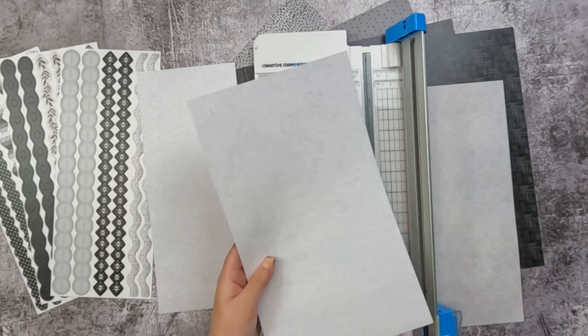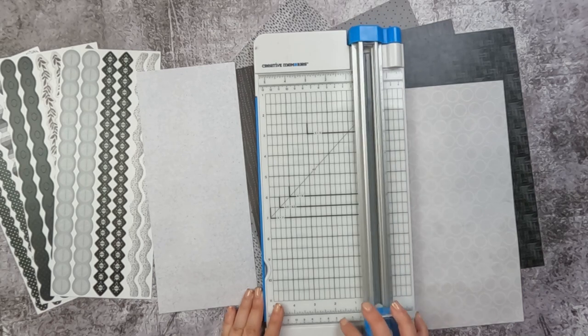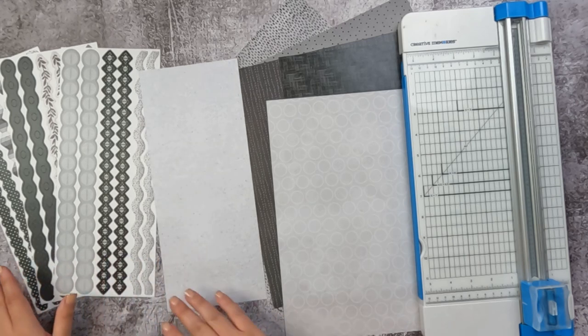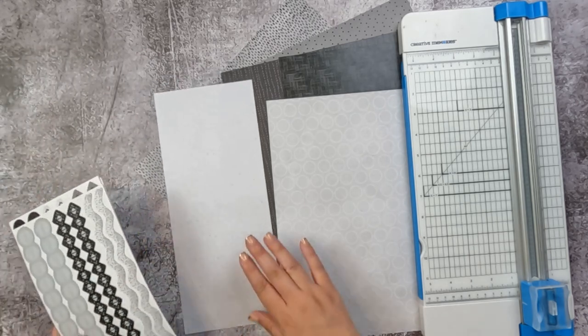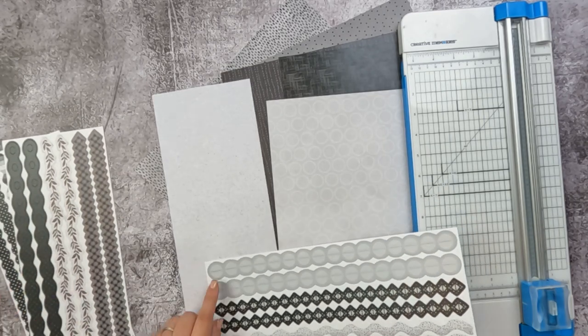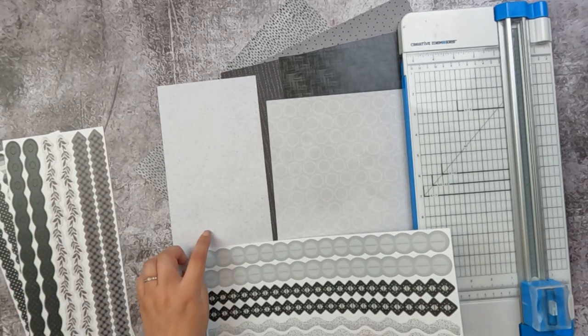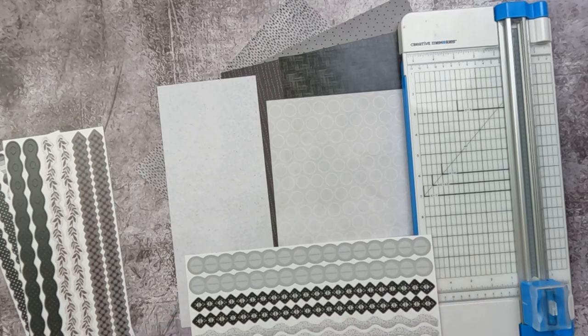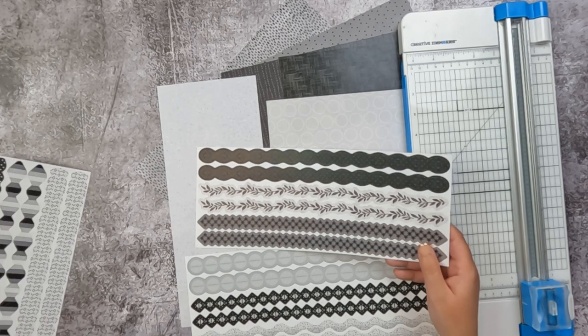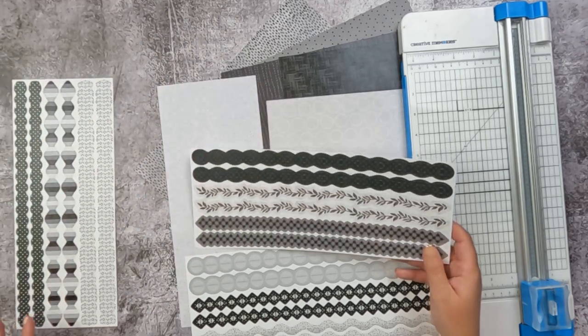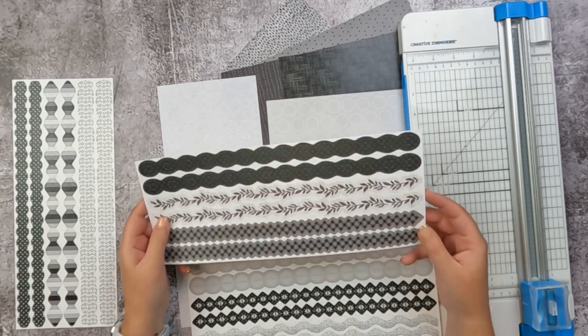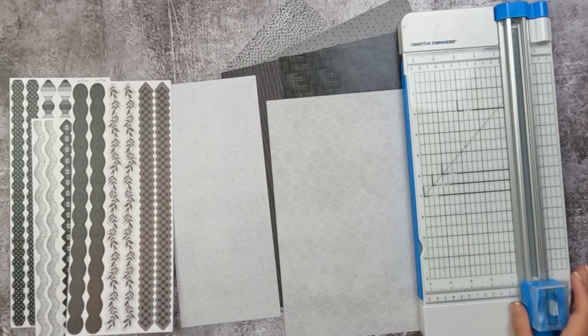I'm going to set that piece aside. I don't think I'm going to need it. Now I want to choose three or four border stickers, some that are chunky, some that are thin, and ones that are really going to pop off of this light background. So I really like this gray, but I'm not sure if that's going to pop enough off of this. But I'm going to hold that. I like that it's really chunky. Oh, I love this stars one. That one's really cool.